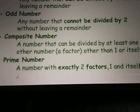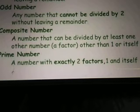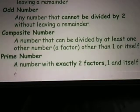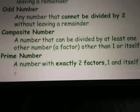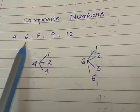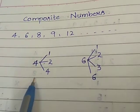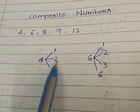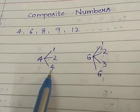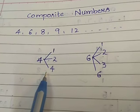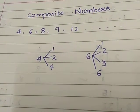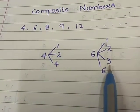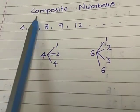Next, let us come to composite numbers. A composite number is a number that can be divided by at least one other number — that is, a number which has more than one factor other than 1 and itself. Examples are 4, 6, 8, 9, 12 and so on. Taking 4: it appears in the 1, 2, and 4 times tables — it has a factor other than 1 and itself, so it is a composite number. Taking 6: it comes in the 1, 2, 3, and 6 times tables — so 6 is also a composite number.